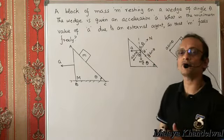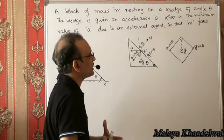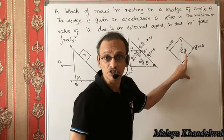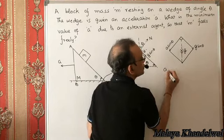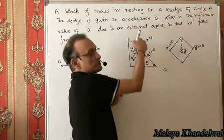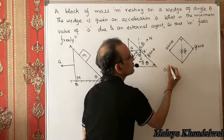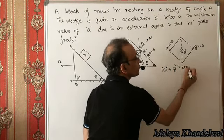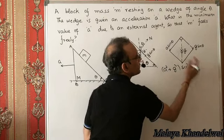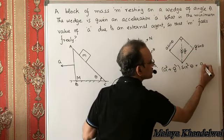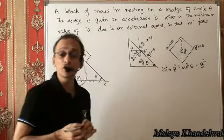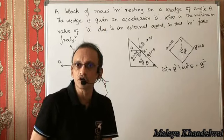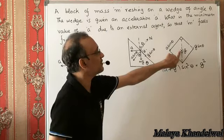In addition to the constraint, m has g·sinθ along the plane. We need a value of a for which the resultant of a·sinθ and g·sinθ equals g. Since a·sinθ is perpendicular to g·sinθ, we have a²·sin²θ + g²·sin²θ = g², meaning this value of a will cause m to fall vertically downwards with net acceleration g.